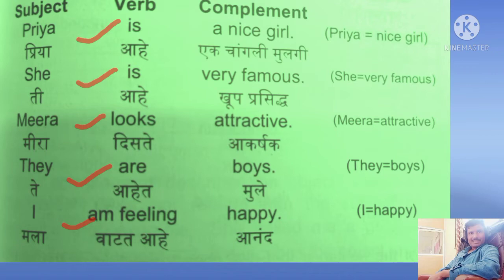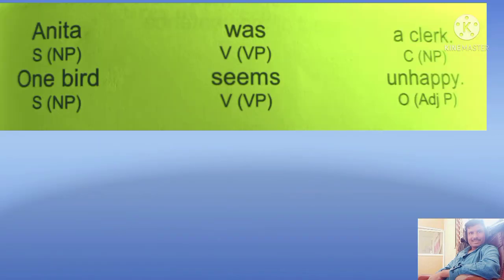Examples of S-V-C: 'Priya is a nice girl' — Priya equals nice girl. 'She is very famous' — she equals very famous. 'Meera looks attractive' — Meera is attractive. 'There are boys' — they refers to boys. 'I am feeling happy' — happy is used for I. Therefore, all these are complements. In the sentence 'Anitha was a clerk,' Anitha is the subject, was is the verb, and a clerk is the complement — a noun phrase functioning as the complement. In 'One word seems unhappy,' one word is the noun phrase subject, seems is the verb phrase, and unhappy is an adjective functioning as the complement.